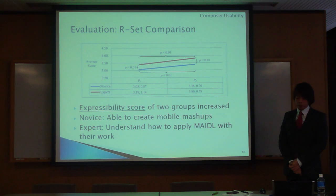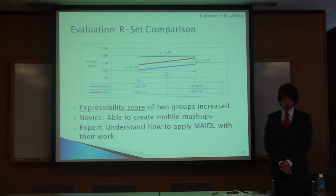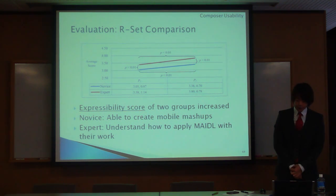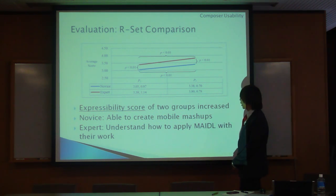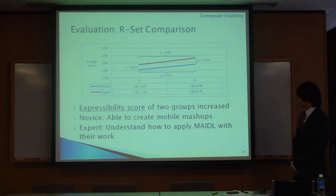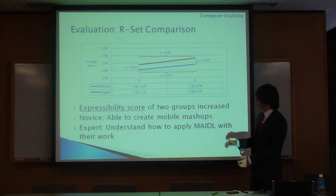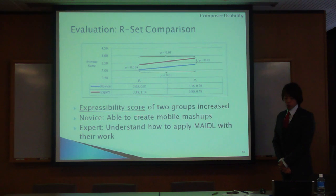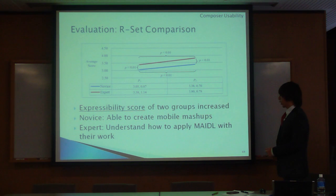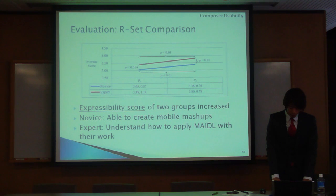For the set observing composer expressibility, the expressivity scores of both groups increased, as you can see in the graph. Notably, novice composers are able to create mobile mashups and understand how to apply mobile components with their work. They may apply the factory web service composition method with HTML and JavaScript, and can create more mashup applications than they could normally.